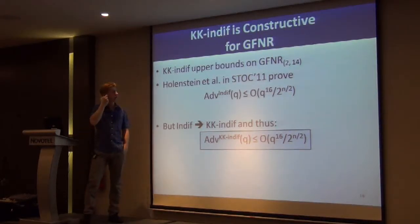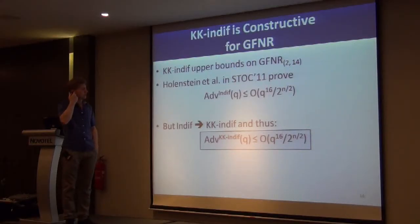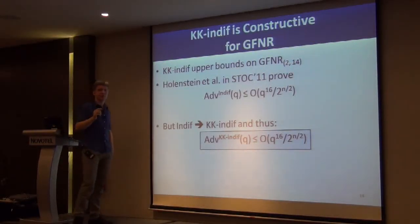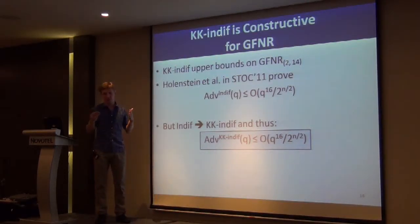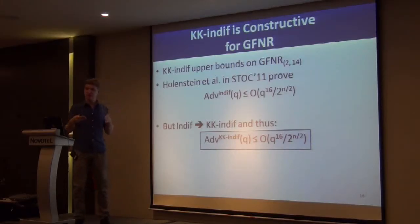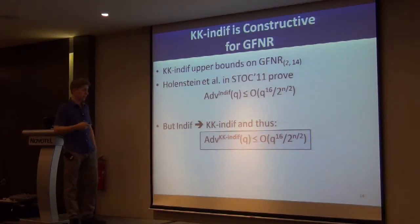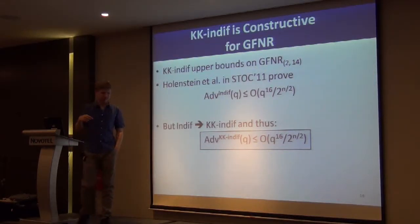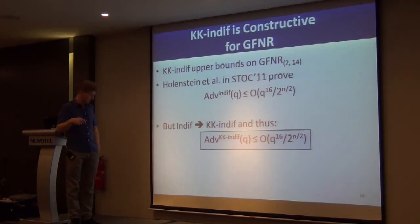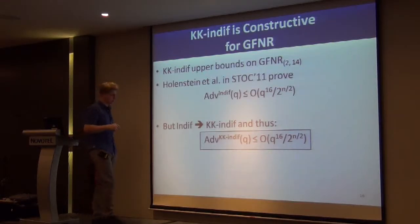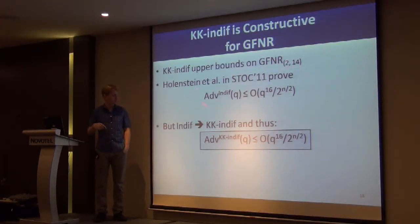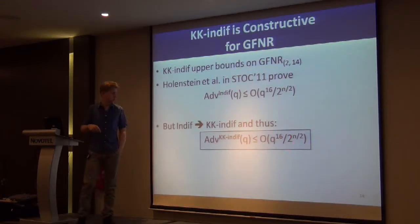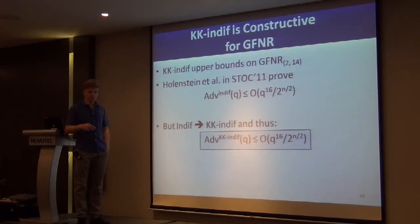Now we want to show that non-key indifferentiability is actually constructive. We have two examples. First, the balanced Feistel with a contracting random oracle as the F function. We know from Holenstein et al. 2011 that for 14 rounds you have a bound on general indifferentiability, which translates — as we know — to a bound on non-key indifferentiability. This means at least one way to prove non-key indifferentiability is to prove general indifferentiability, so the same bound holds also for non-key indifferentiability.